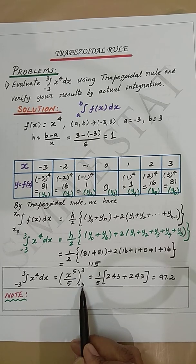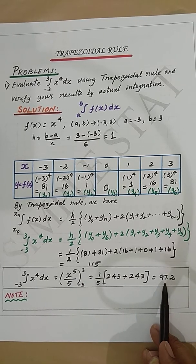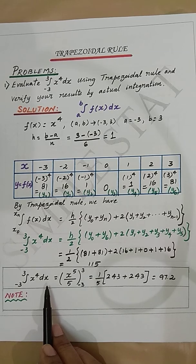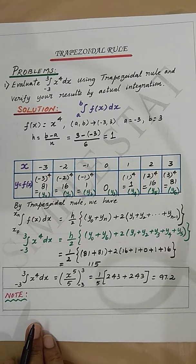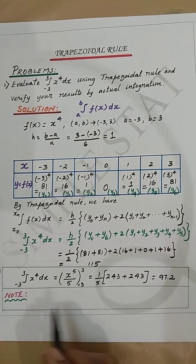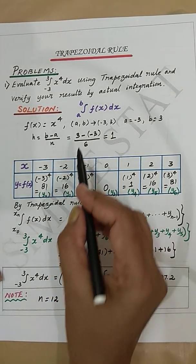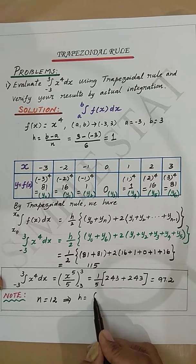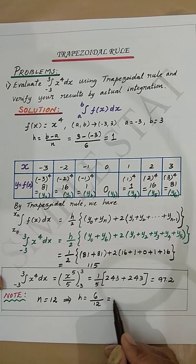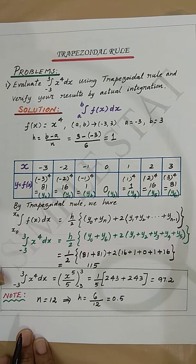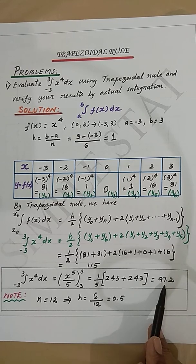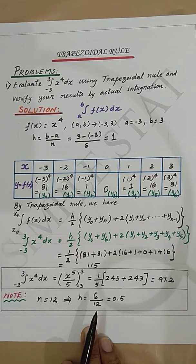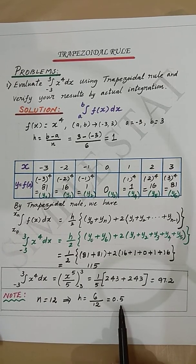Evaluating x⁵/5 over the limits −3 to 3 gives the answer as 97.2. So by the trapezoidal rule our answer is 115, and by actual integration we get 97.2. Note that if we had taken n = 12 instead of n = 6, then h = 6/12 = 0.5, in which case we could have obtained an answer nearer to the exact value. Hence we can say that the accuracy of the result can be improved by increasing the number of intervals and decreasing the value of h.